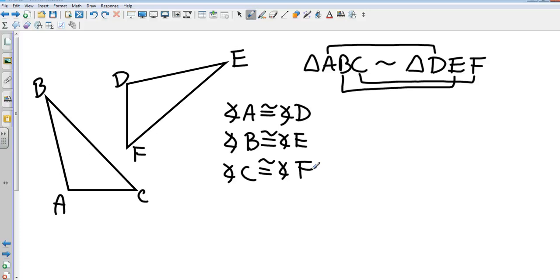Now we need to set up a proportion for the sides. Again, I can look at it just by my statement right here, and I can go with side AB has to be proportional to side DE.